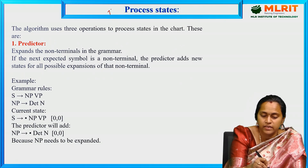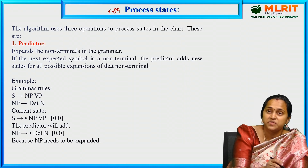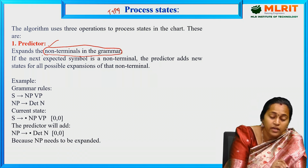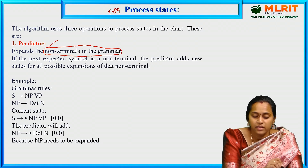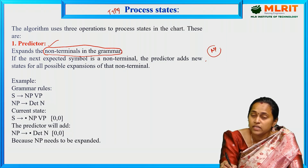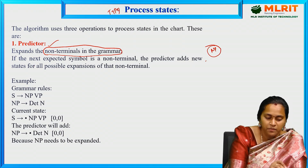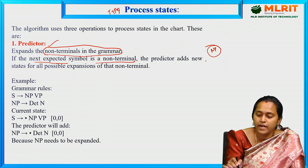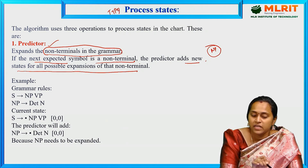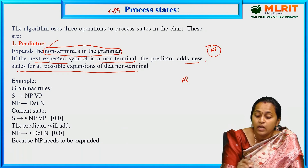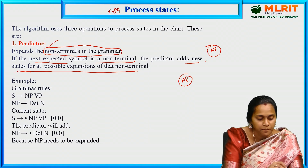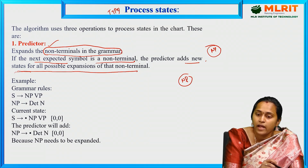There are three types of process states. The first one is the Predictor. The Predictor expands the non-terminals in the grammar. By using the Predictor, we can expand non-terminal words. If the next expected symbol is a non-terminal, the Predictor adds new states for all possible expansions. For example, if the next symbol is a noun phrase, the Predictor automatically adds new states for all possible expansions according to the context.